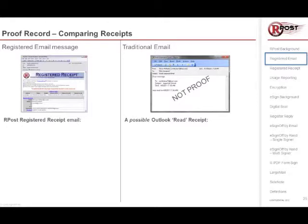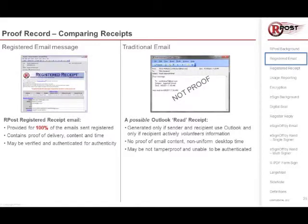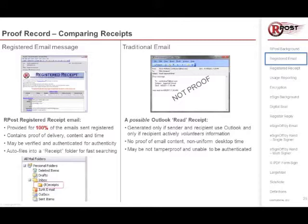With ARPOST, the receipt is sent back and returned to the sender 100% of the time when the service is used. It contains proof of delivery content and time, requires no action on the receiver's end, and can be verified or authenticated for the authenticity of the record. By default, ARPOST returns the receipt to the sender and places it right into a receipt folder, so it is automatically filed without any extra steps for the sender.